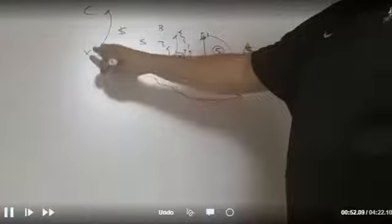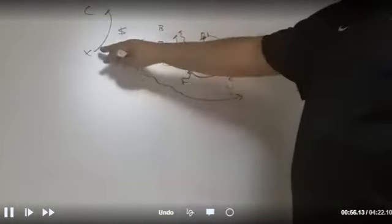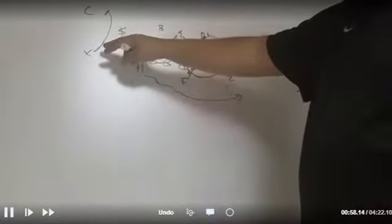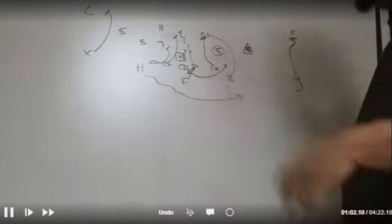On the back side here, we're working a cutoff technique. So versus a one high defense, you just work a cutoff technique on the back side, on the corner. Just get inside position, cut him off.